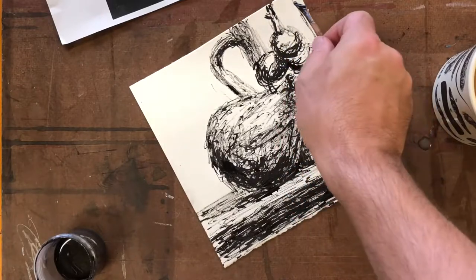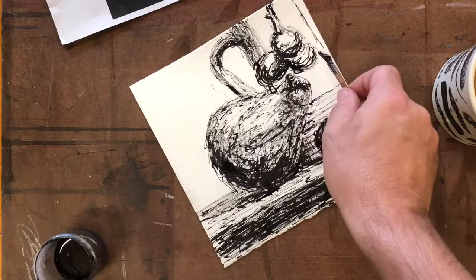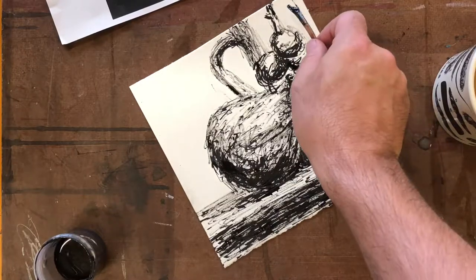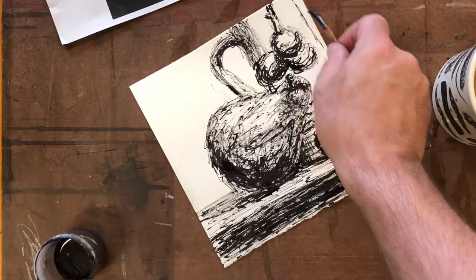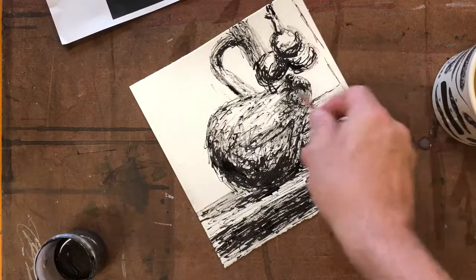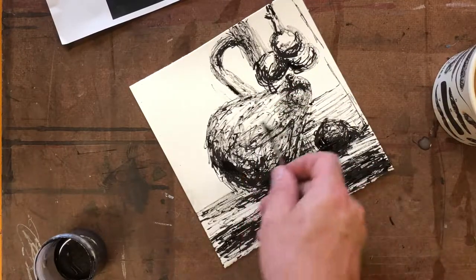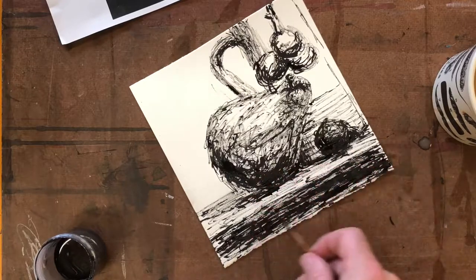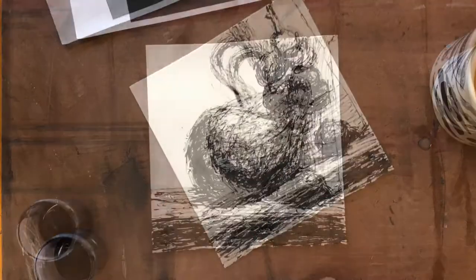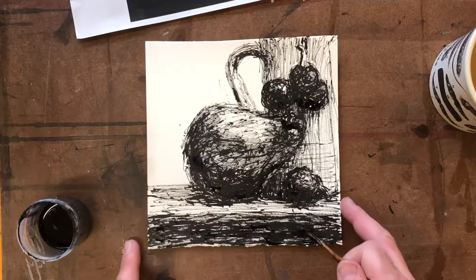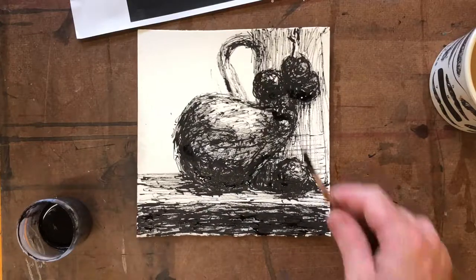More resolution in the grapes here, a bit more between the edge of the jug and the background here just so that you can see the difference between them. This is starting to look okay, this area here still needs a little more work.